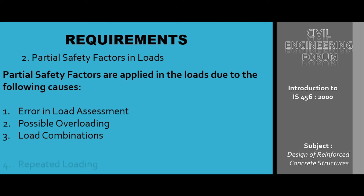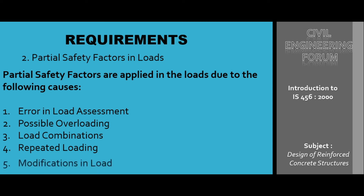The fourth cause is repeated loading — if the structure faces repeated loading at any random place, there are chances of failure, which is why we need partial safety factor. The fifth and last reason is modification in load — once the design and analysis of the structure is completed, there may be a change in the purpose of the building or structure, which might not affect the design if partial safety factor was used from the beginning.